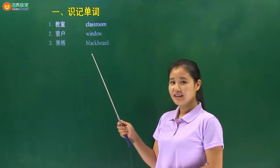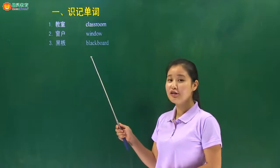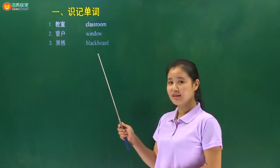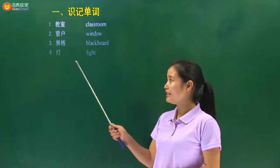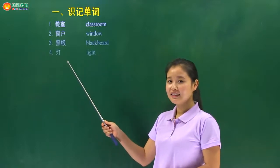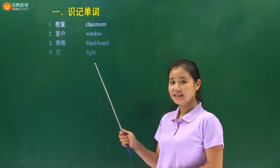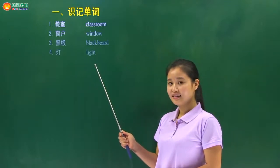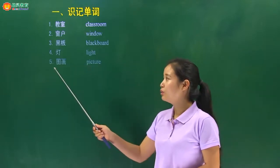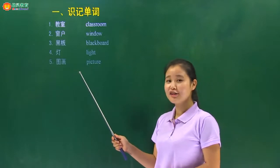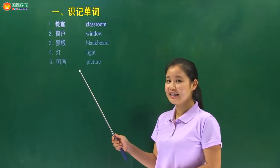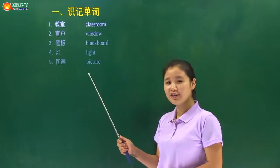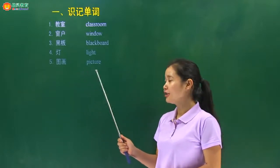Blackboard，blackboard. 老师都要在黑板上写字，对不对？Next one，下一个，灯，light. Next one，涂画，picture. 我们知道教室有些墙壁上贴了大家画的一些涂画，picture.